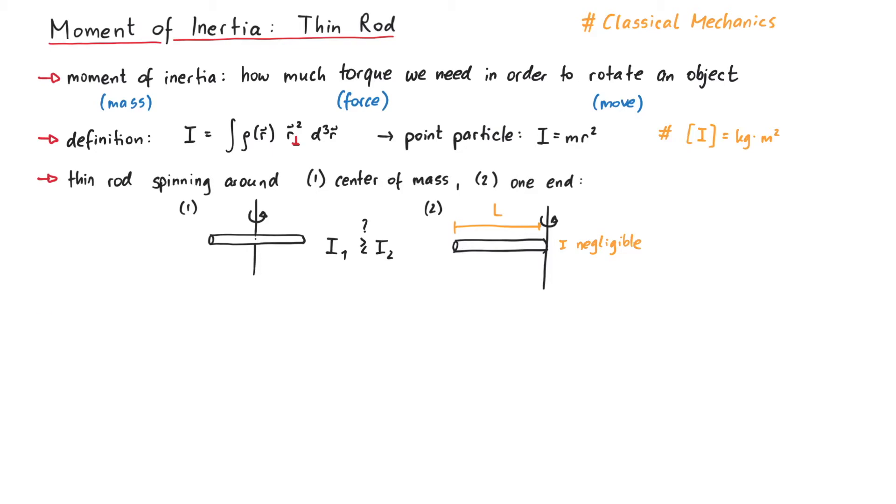Let's first consider the rotation around its center. We put the origin of our coordinate system in the center of the rod, and can then integrate from minus L over 2 to plus L over 2. Remember, since this is a one-dimensional problem, we just have the r here.